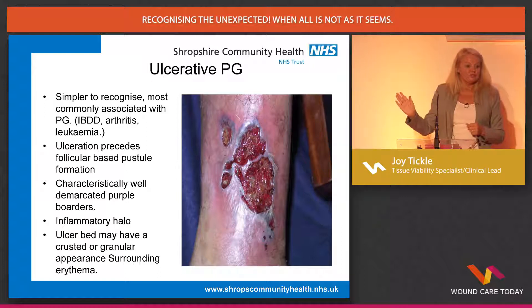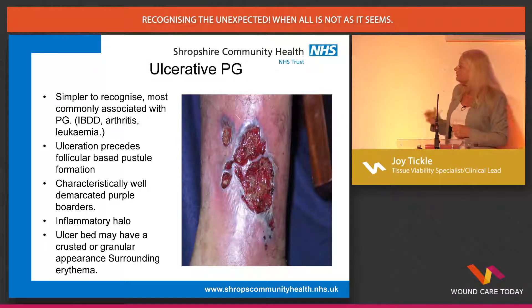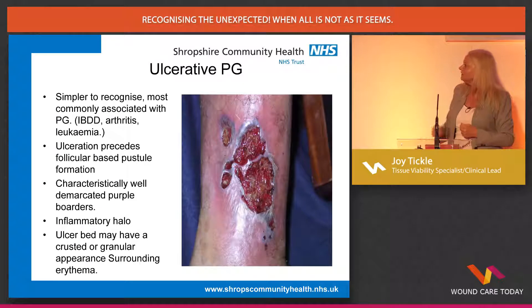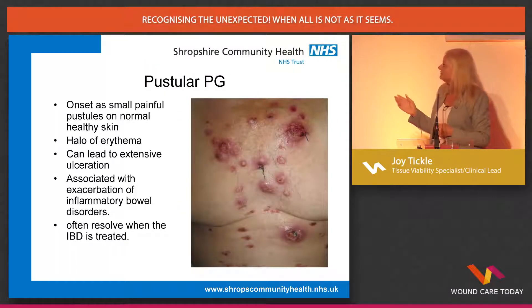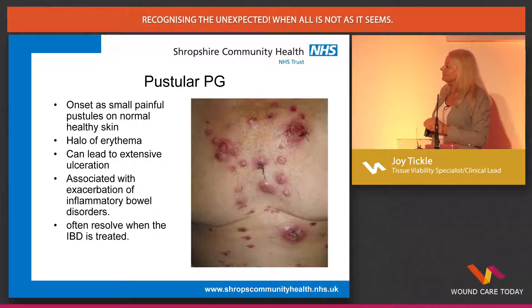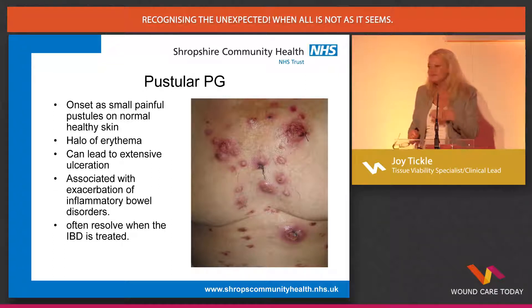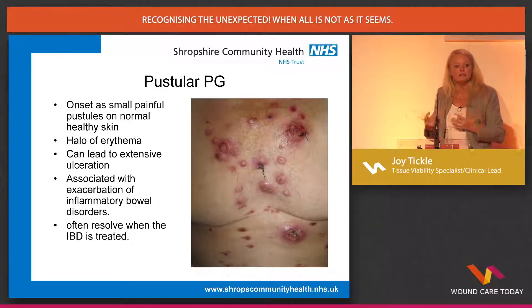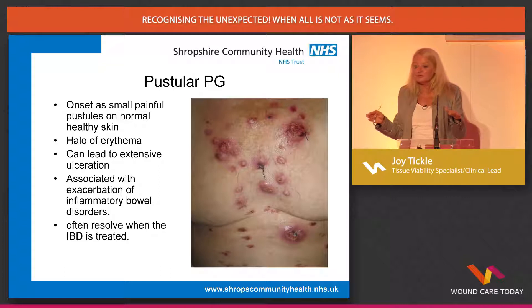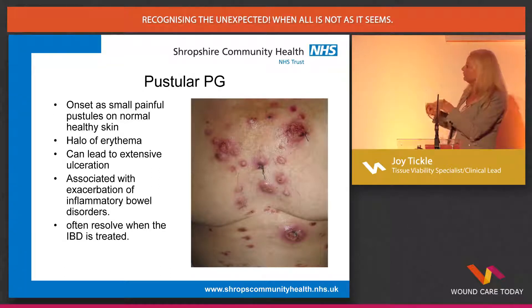You can see that purple edge, that demarcation, and that tinge. The tissue may look granular, but through your own experience you know it's not healthy granular tissue. Pustular pyoderma consists of lots of painful pustules, normally on healthy skin, but they have that marked halo around them and can lead to extensive ulceration. If you see that on a patient, it's very classically associated with an exacerbation of inflammatory bowel disorders. Start thinking about those underlying inflammatory bowel disorders — if there's no diagnosis, do we need to look for one? Because if you resolve the inflammatory bowel disorder, the pyoderma responds extremely well.